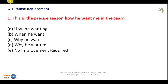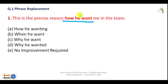One sentence is given and you have to correct the bold part. These are called phrase replacement questions because in this sentence you have to replace a particular part — for example, this highlighted part — if you think that part is wrong.